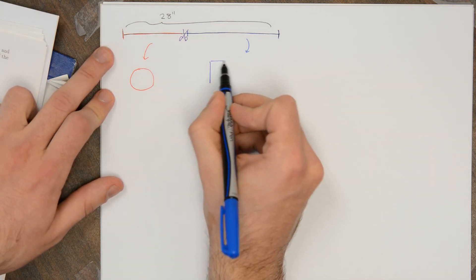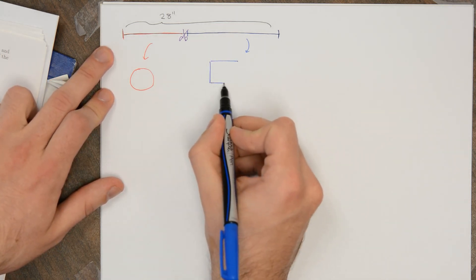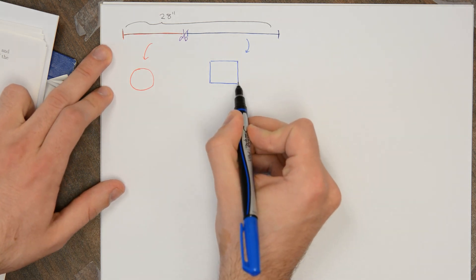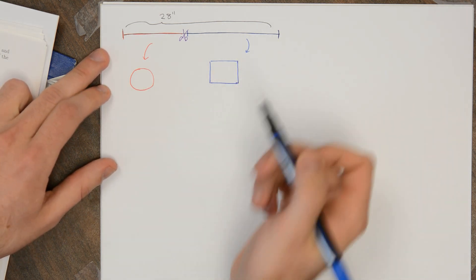The question is what's the largest and smallest areas that we can enclose with these two shapes, the circle and the square together.